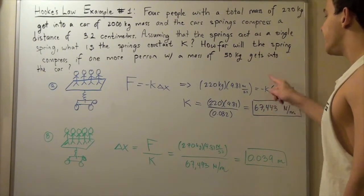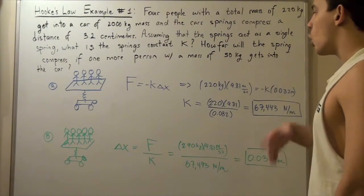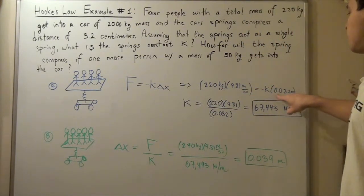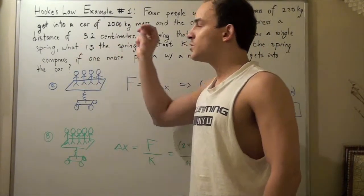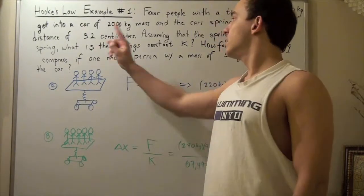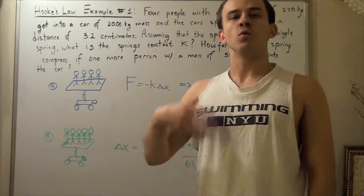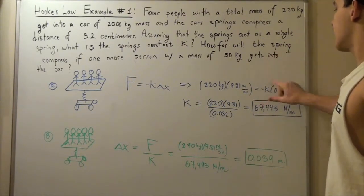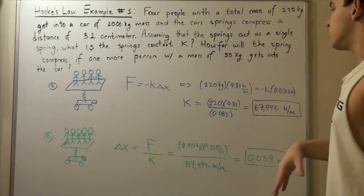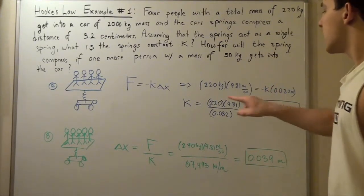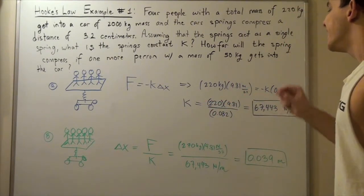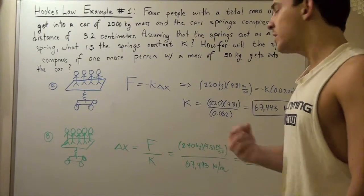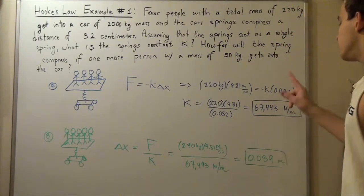This equals k times 0.032 meters. Note that we begin with 3.2 centimeters and we want to convert into meters. So we take 3.2 and we divide that by 100 because there are 100 centimeters in a meter. Now we solve for k. So k is equal to 220 times 9.81 divided by 0.032 meters and we plug that into our calculator and we find that our spring constant is 67,443 newtons per meter.